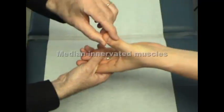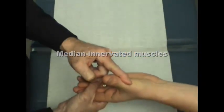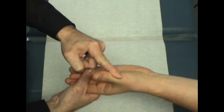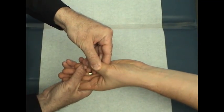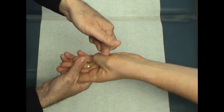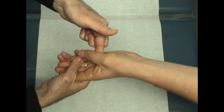Abductor pollicis brevis. Thumb is over the palm and I'm pushing against it in this direction. Push straight down. Don't bend your thumb. Opponens pollicis.